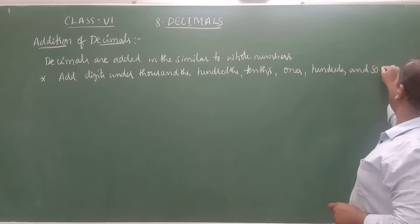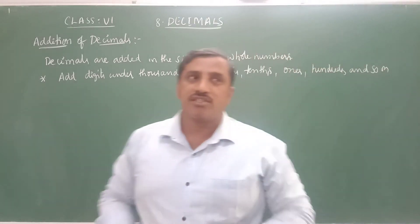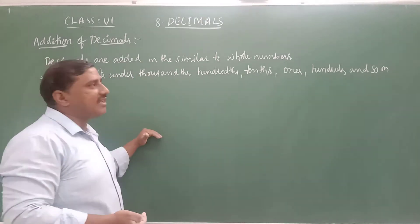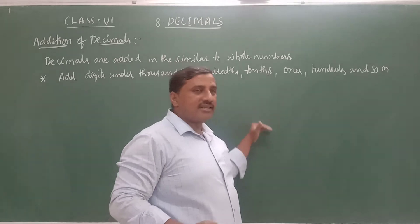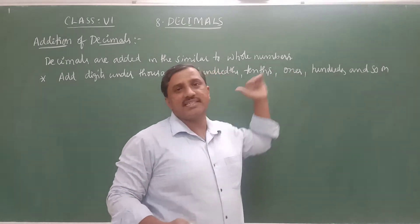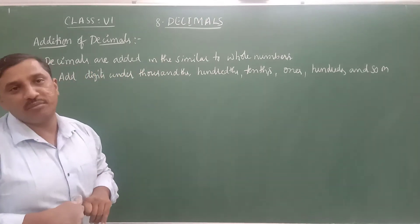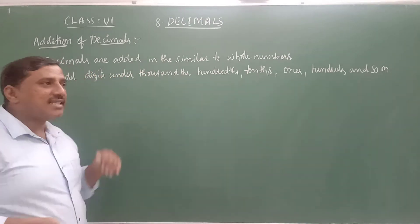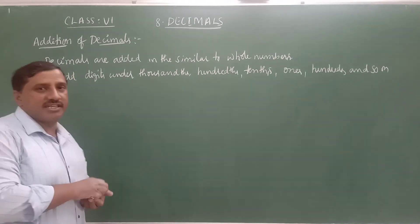And so on — in the sense, it goes thousands, ten thousands, lakhs. So we have to add the thousands digits, then the hundredths digits, then the tenths digits, and the ones digits — just as we have done for whole numbers, in the similar way we have to do it. Let us discuss a few examples of how to add these numbers.